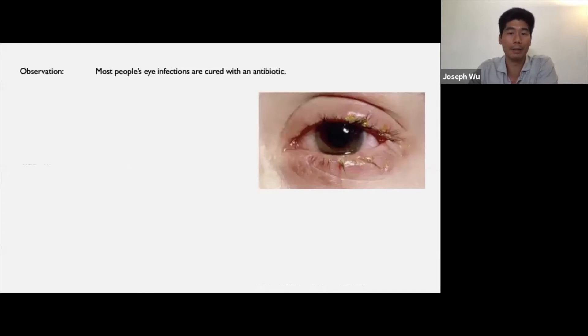Here's another example. Most people's eye infections are cured with an antibiotic. Now imagine your friend Mary comes in with her eye looking like this, and you diagnose Mary with an eye infection. It would then be natural to make the following inductive inference: Mary's eye infection will be cured with an antibiotic. Again, both observations provide evidence for this conclusion. However, even if most people's eye infections are cured with an antibiotic, and even if Mary has an eye infection, it does not necessarily follow that her eye infection will be cured with an antibiotic.